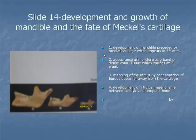Item 5: Growth of the mandible occurs by the modeling of bone. Increase in height occurs by the formation of the alveolar bone, though some bone deposits at the lower border of the mandible. Increase in length is by deposition of bone on the posterior aspect of the ramus and the coronoid process, with compensatory resorption at the anterior surface of the ramus and the condyle.